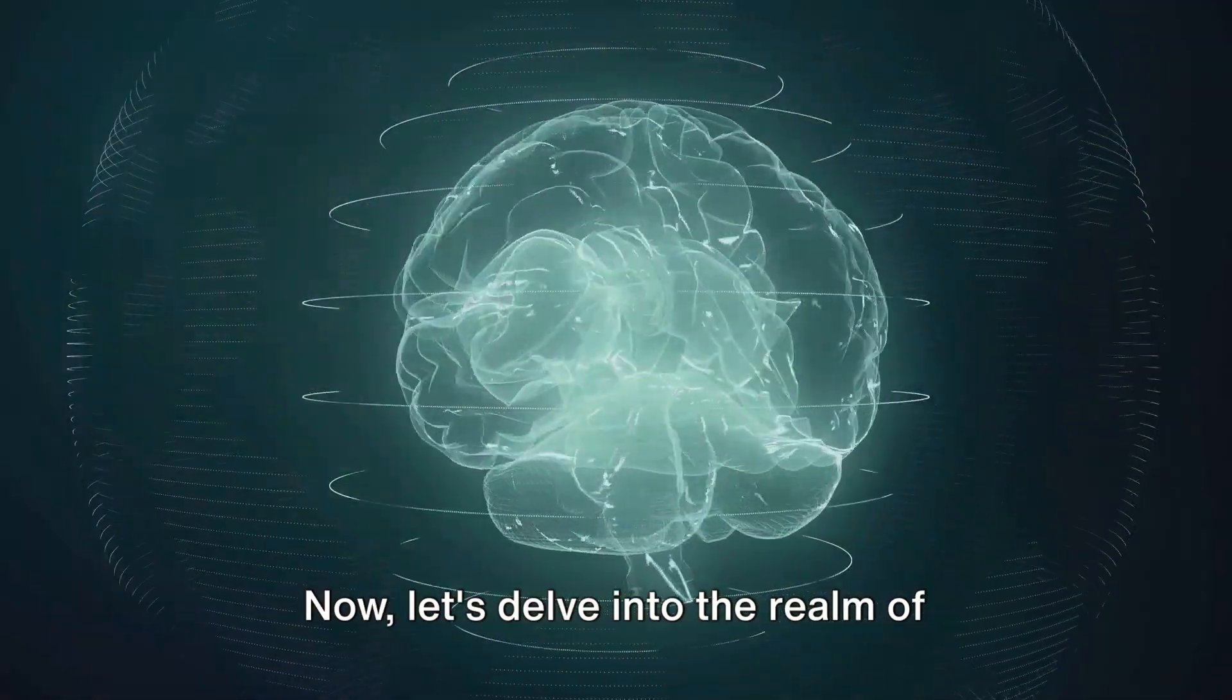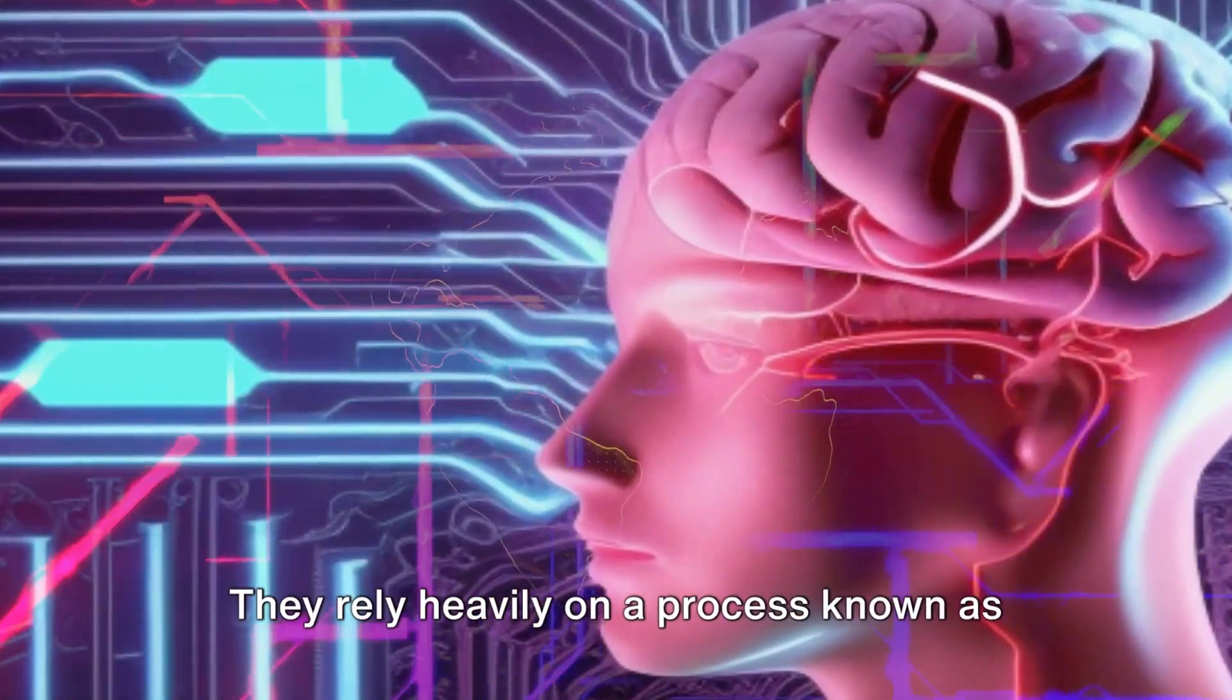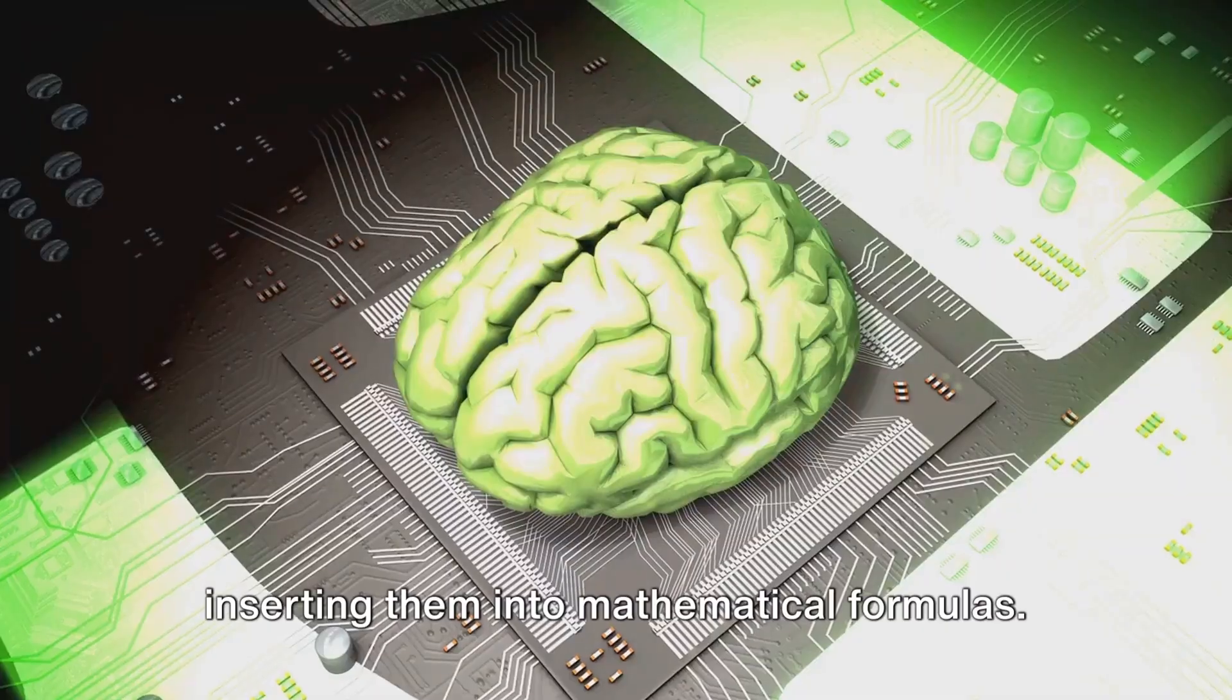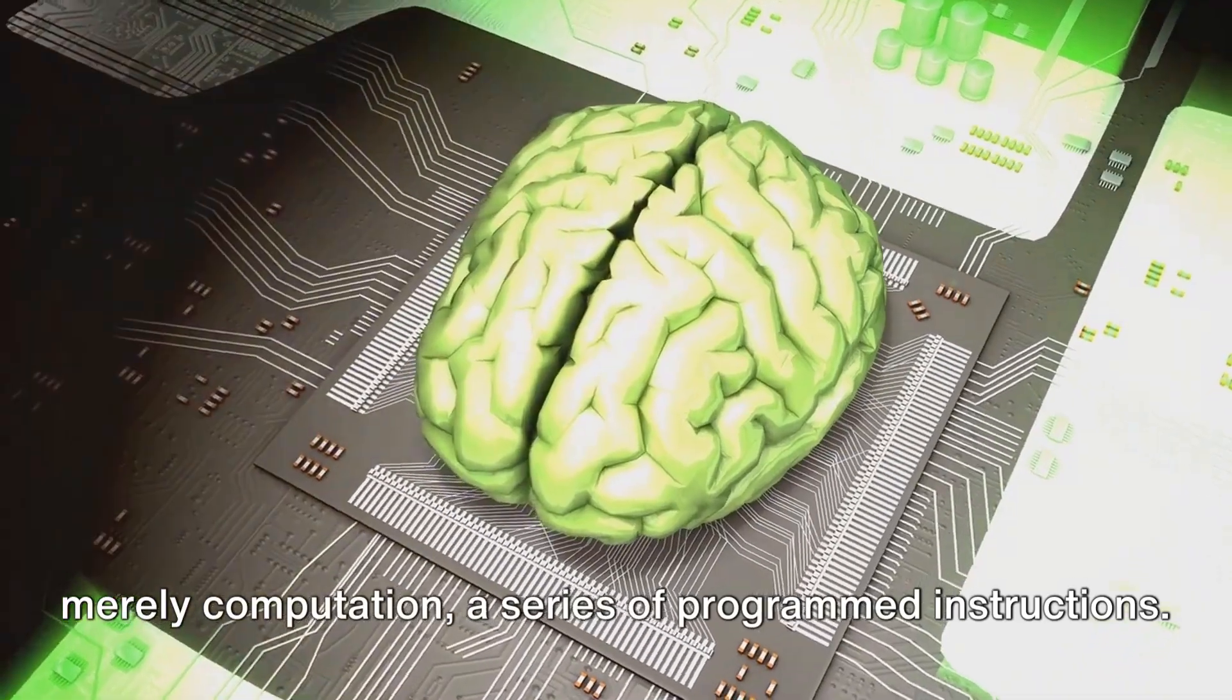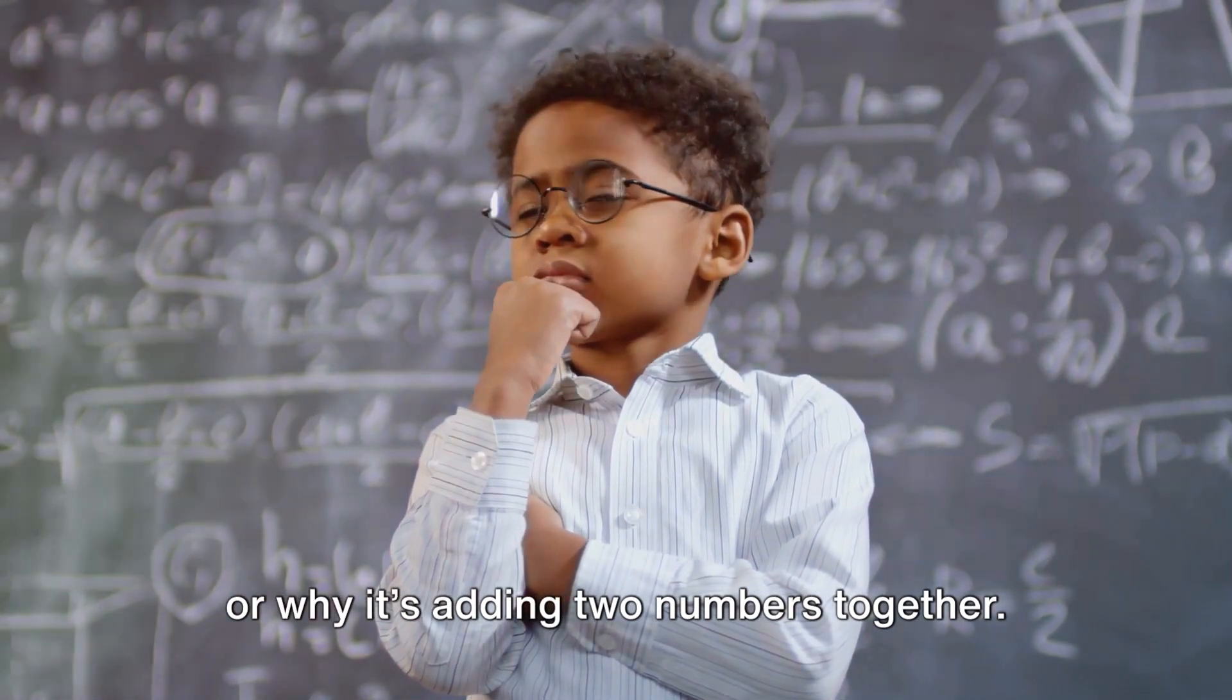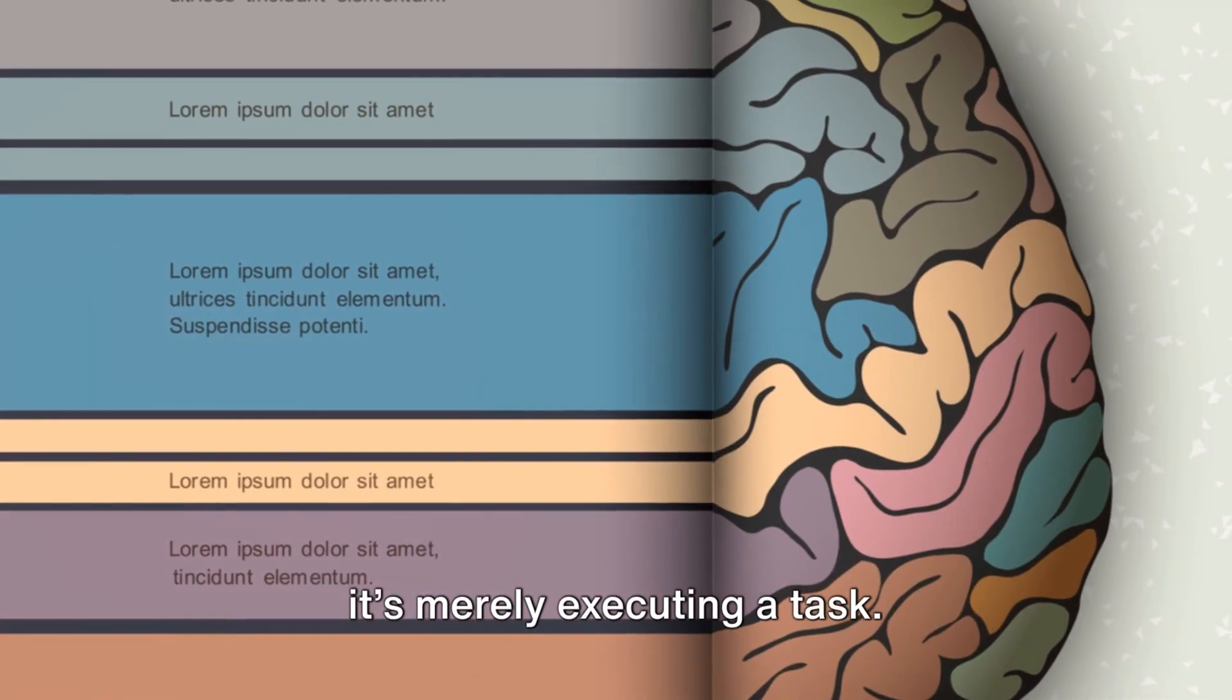Now let's delve into the realm of computers and their relationship with this precise language. At present, computers essentially serve as powerful calculators. They rely heavily on a process known as numerical substitution, taking numbers and inserting them into mathematical formulas. This process might seem complex, but it's merely computation, a series of programmed instructions. Imagine a computer solving a simple algebraic equation. It doesn't understand why x equals 5 or why it's adding two numbers together. It follows a set of predetermined steps to reach an answer. It's not understanding the mathematics, it's merely executing a task.